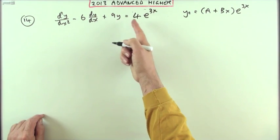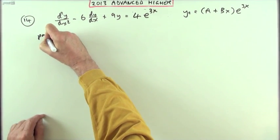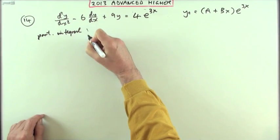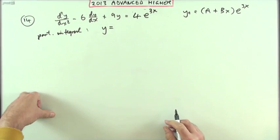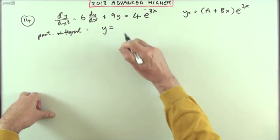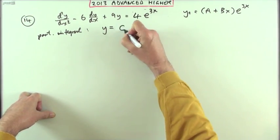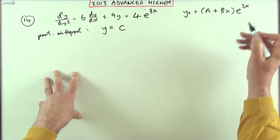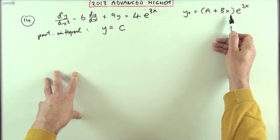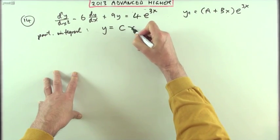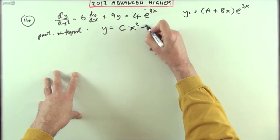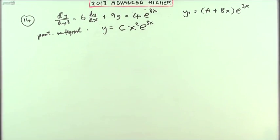If I'm looking for a particular integral, the form of that particular integral can't be Ce^(3x) or xe^(3x), because I've used them up already and given the answer 0. You'd have to go on to the next one: multiply by x again and have x²e^(3x). I'll have to feed that through.